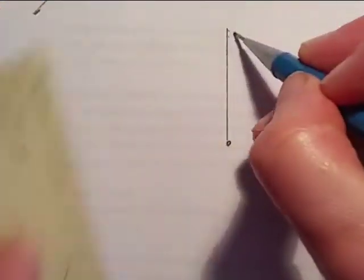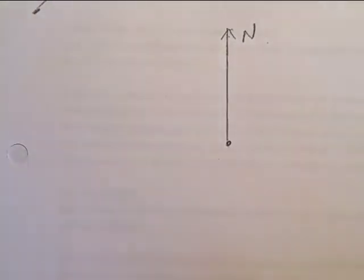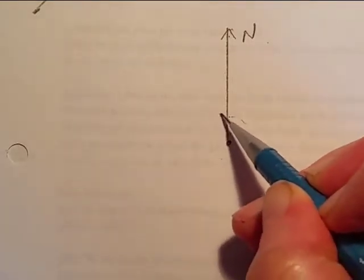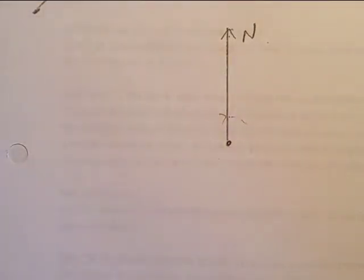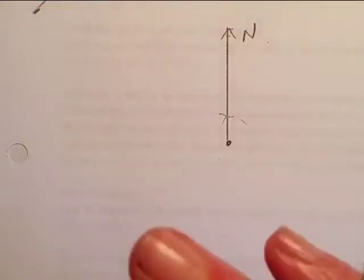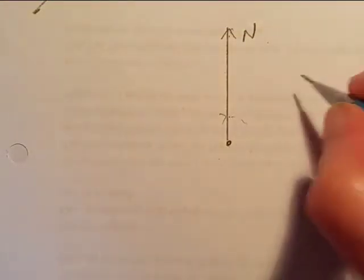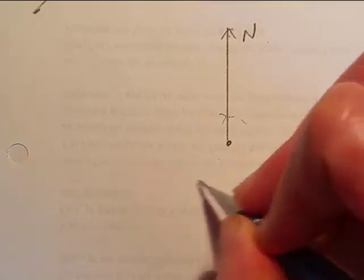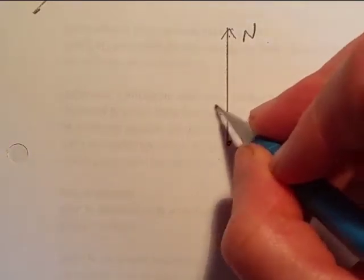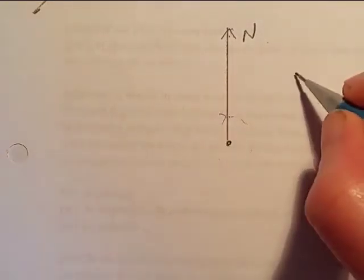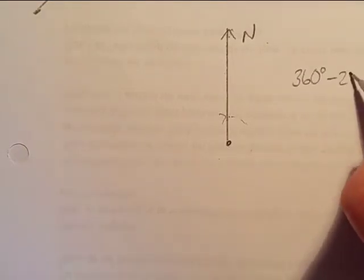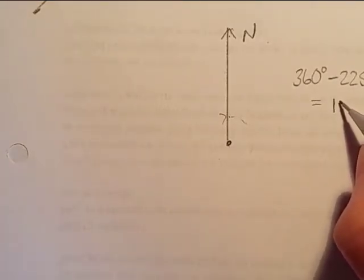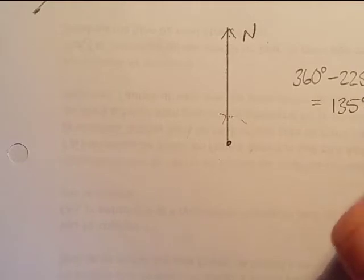Now you know that in a whole revolution - so right round from here all the way around to here again - would be 360 degrees, that's a full circle. So you could say well we want 225 degrees, so it's going to be over here somewhere. This angle is going to be 360 degrees minus 225 degrees, which is 135 degrees.